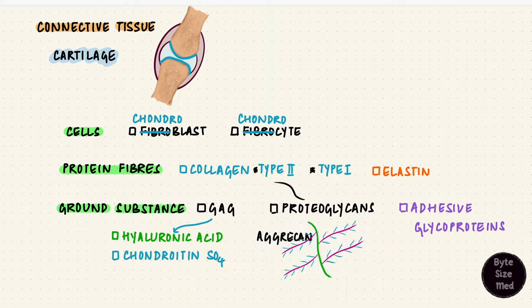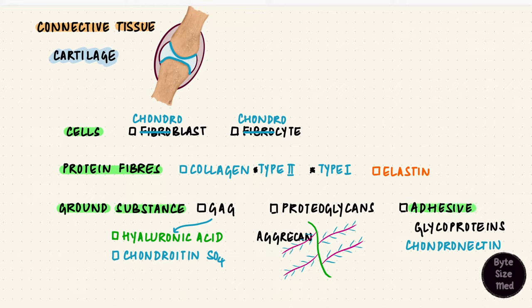The proteoglycans are linked to collagen fibers. The last structure is adhesive glycoproteins. Here an important one is chondronectin. It is adhesive and attaches cells to collagen fibers. The distribution of these three components differs depending on the type of cartilage, and there are three different types.